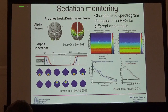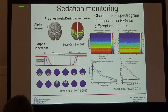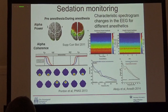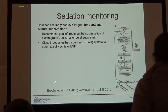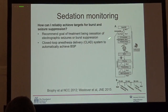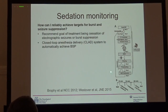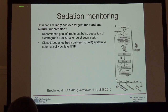Emery Brown's group in Boston has done extensive work identifying specific signatures in quantitative EEG associated with different anesthetics. We can potentially use that as a target for sedative management during operations. Taking it a step further, a closed-loop anesthesia delivery system uses the EEG as feedback to the infusion pumps, keeping the EEG at a steady level and preventing the patient from getting too much or too little anesthesia.